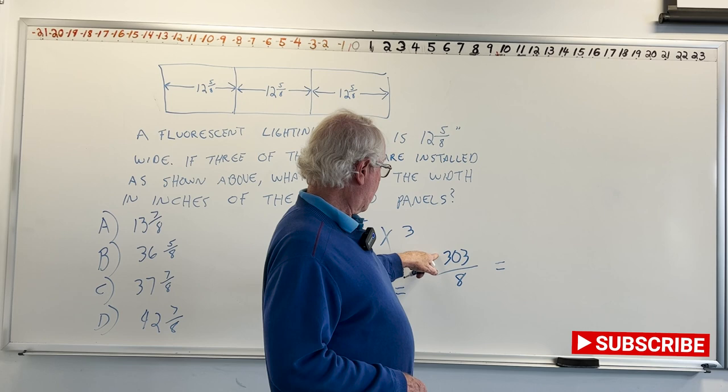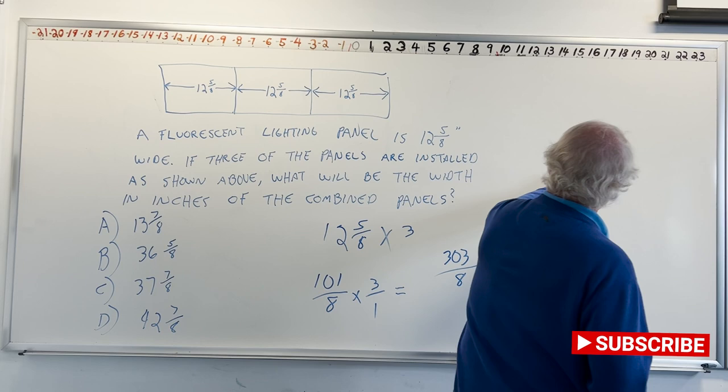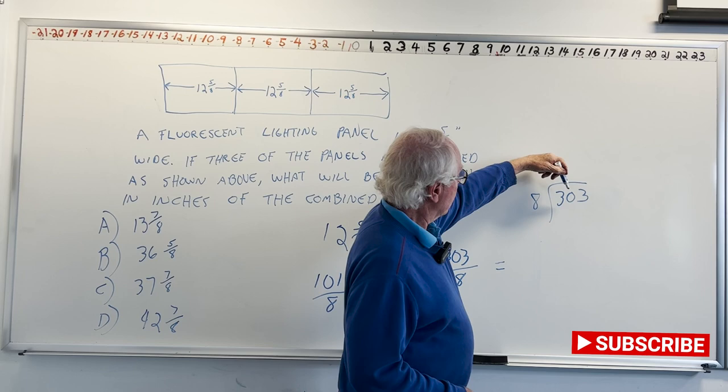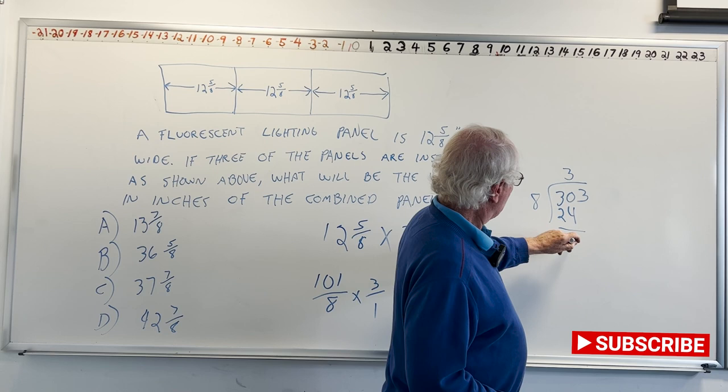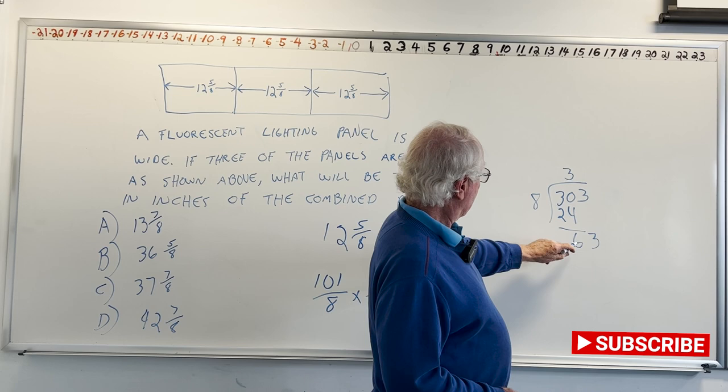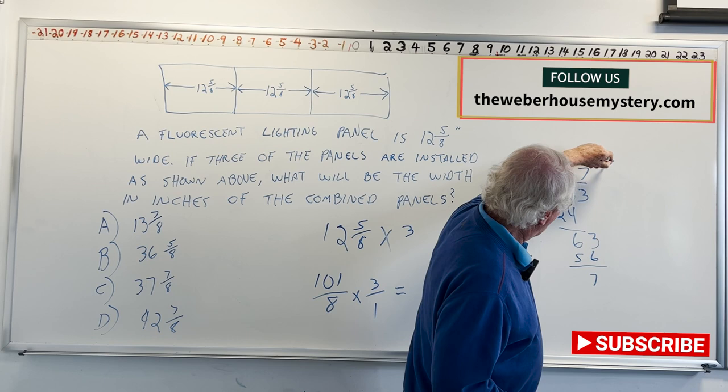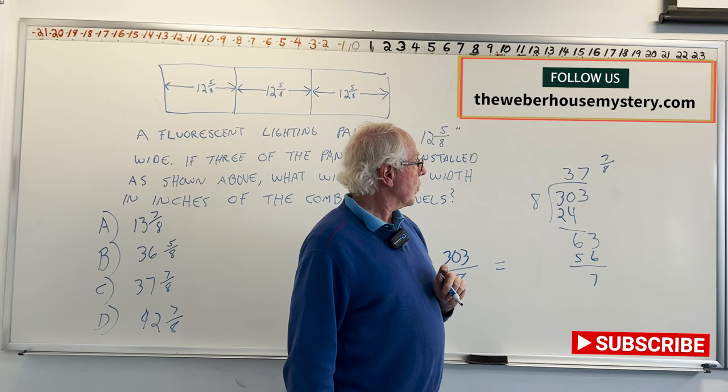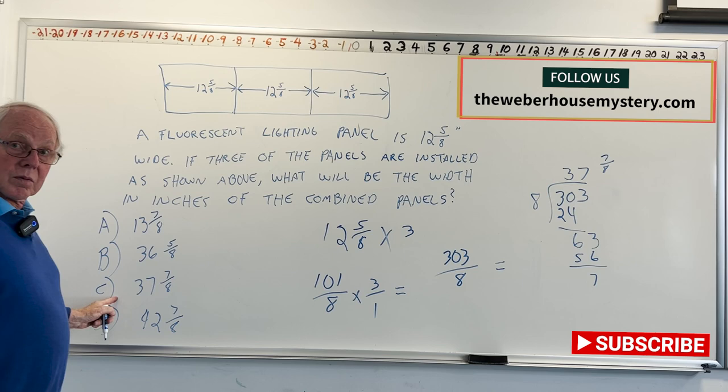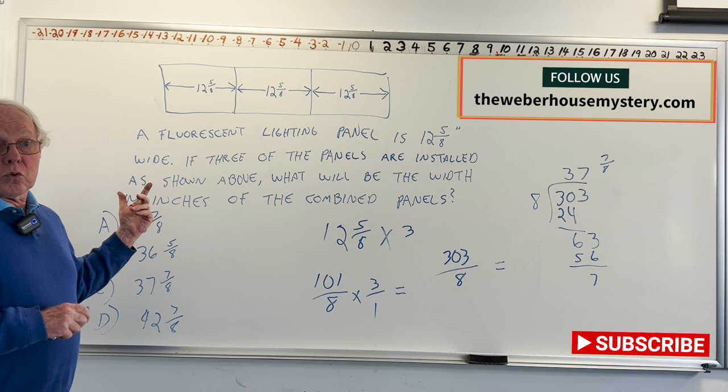So 8 goes into 30, 8 times 3 is 24. Let's do it this way just to limit any error. 8 goes into 30 three times. 3 times 8 is 24. 10 minus 4 is 6. Bring down the 3. Now it's 8 into 63. So that's going to be 7. 8 times 7 is 56. 13 minus 6 is 7. 7/8. These three panels strung together would make a total of 37⅞. And there it is. We'll be doing more problems in the future that will require us to use these skills and that's what we'll be doing next time. Thanks.